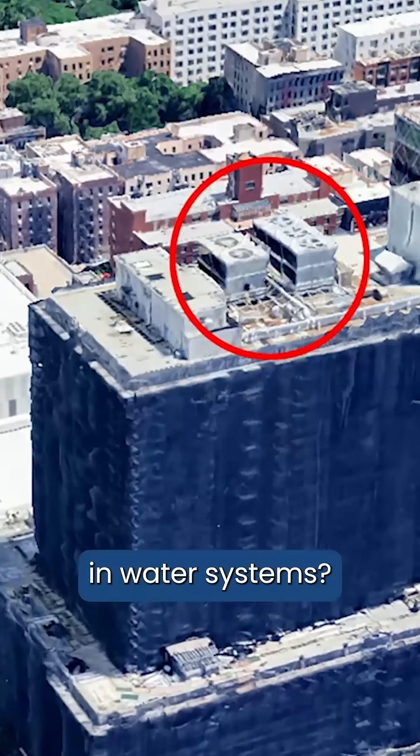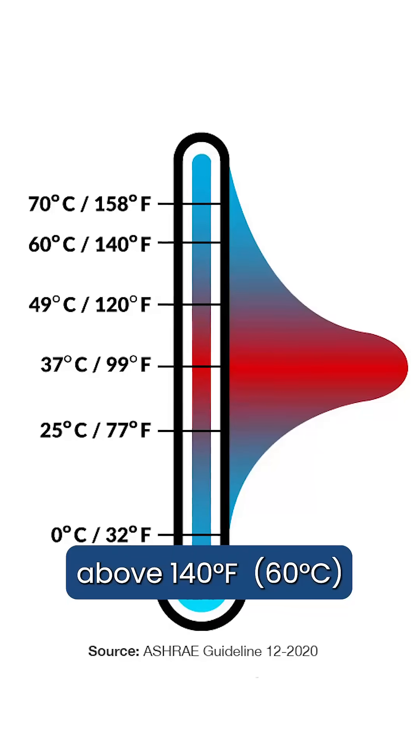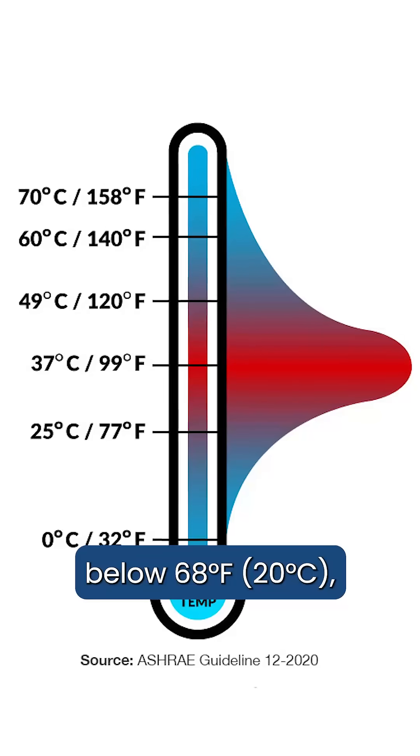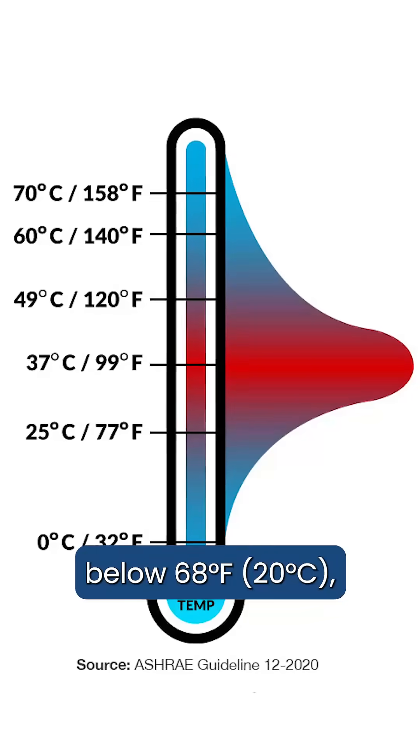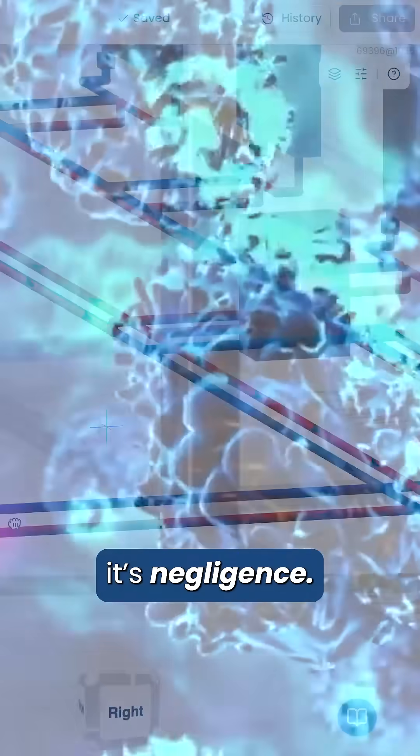So how do you prevent Legionella in water systems? Simply put, keep the hot water in your system above 140 degrees Fahrenheit or 60 degrees Celsius, and the cold water below 68 degrees Fahrenheit, 20 degrees Celsius. Make sure to regularly test and disinfect your system, because if there's one thing that Legionella likes most of all, it's negligence.